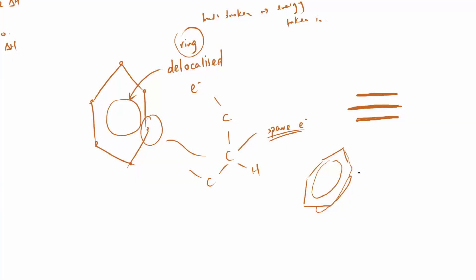I'll leave the orbital detail to Chemguide - there's a great Chemguide page where he goes into more detail about the orbitals and the subshells and how you end up with these delocalised electrons. But the long and short of it is: we have a delocalised ring of electrons within benzene, and that is what is shown by this circle in the centre. It's important that you draw it exactly like that - a hexagon with a circle inside - because that's the structure of benzene.